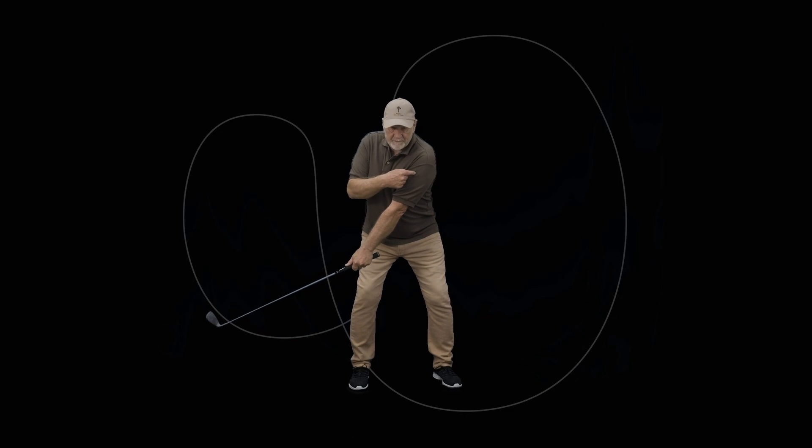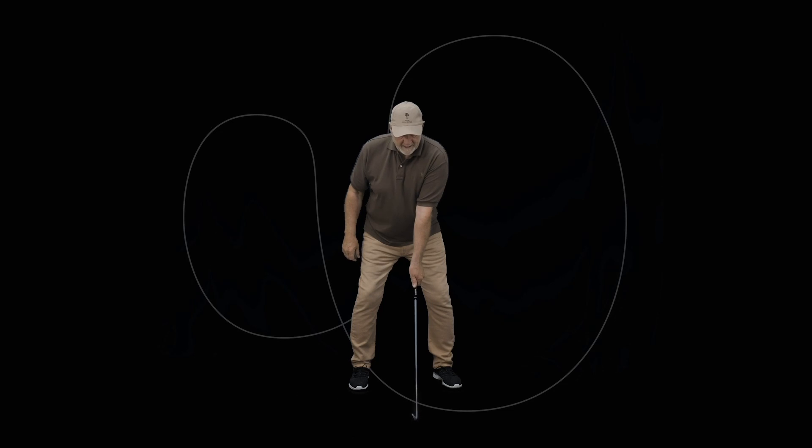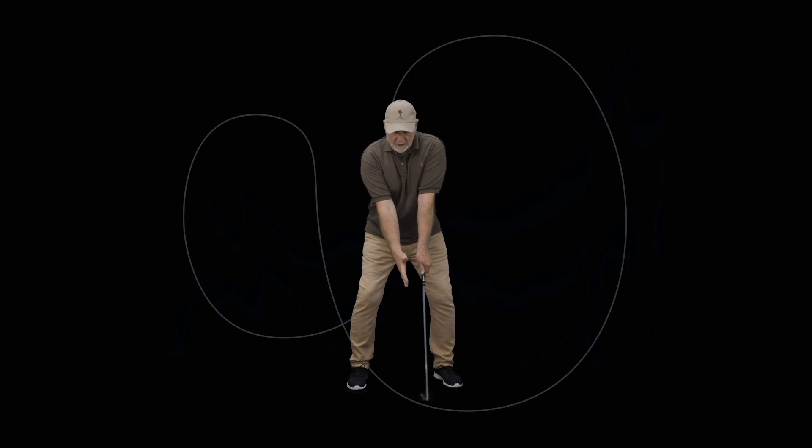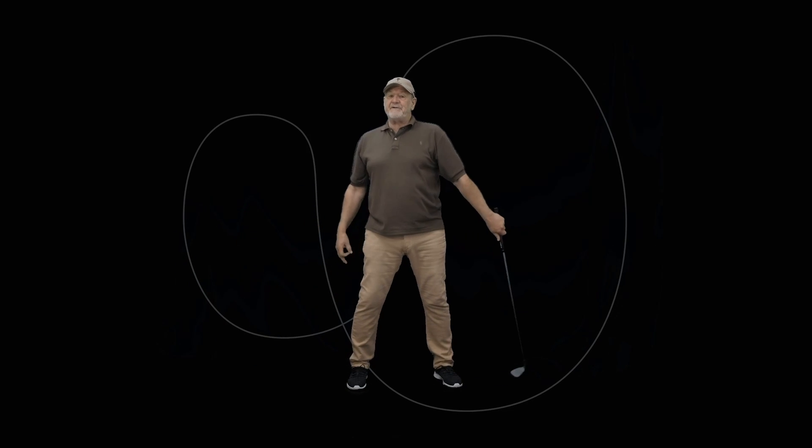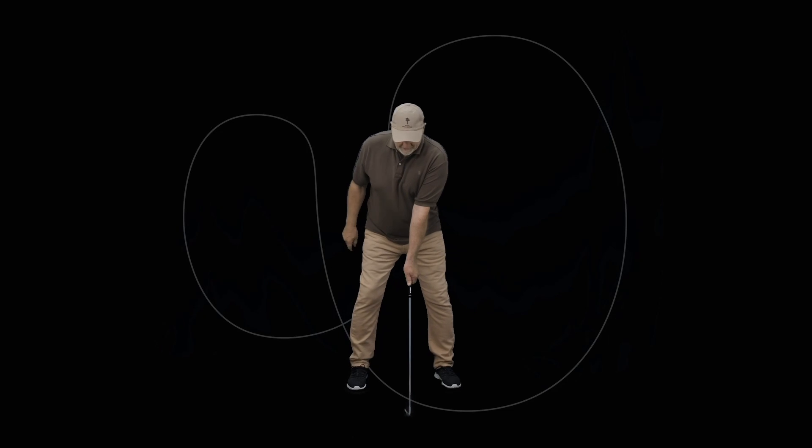I can feel the pressure being built between my lead arm, my pec, my ribcage. If I do what people think, this one-piece takeaway rubbish where the shoulders and the arms move together, I create zero pressure. I'm going to be in all sorts of trouble. You can only swing as wide as the lead arm allows because that's the length—it doesn't grow as you play golf.